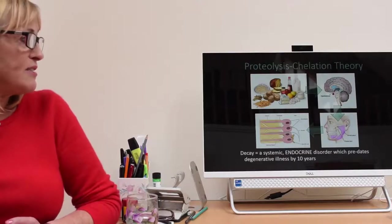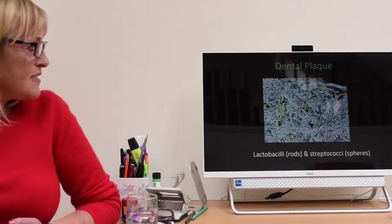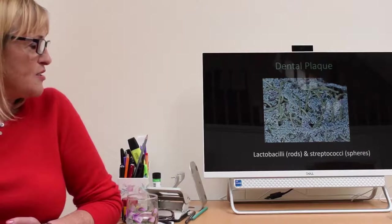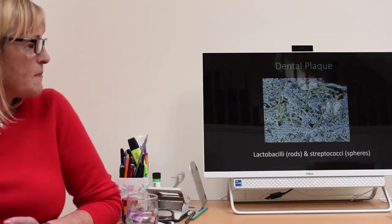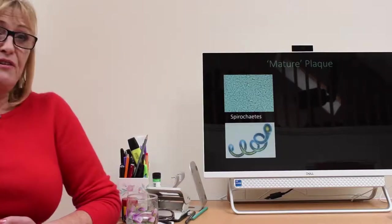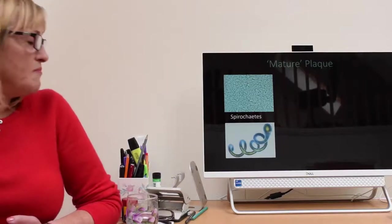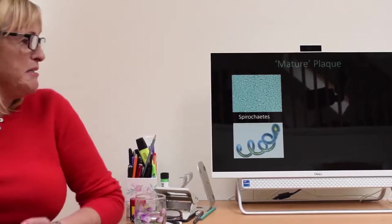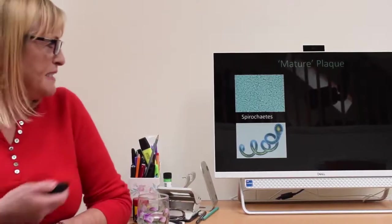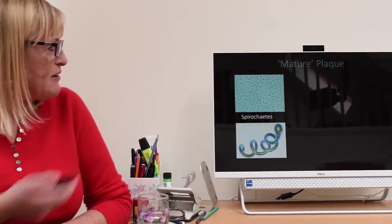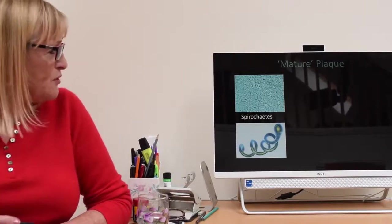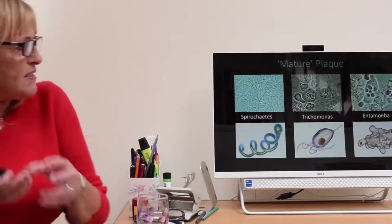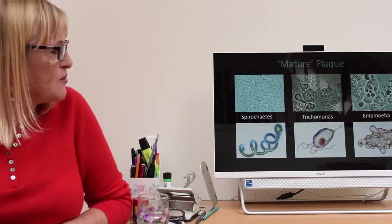This is the proteolysis chelation theory, that the calcium-phosphorus balance of the diet affects the hypothalamus, which produces a hormone affecting the parotid salivary gland. That produces a hormone which impacts the odontoblast. He said it was an endocrine disorder and it predated degenerative illness by 10 years. Any dental decay is an early warning sign. This is regular plaque with lots of spherical streptococci and lactobacilli rods. This is mature plaque. You can see real live plaque under the microscope, a whole ecosystem of beating, pulsating bacteria. These are spirochetes that can burrow into tissues. Trichomonas can swim. Amoebas can squeeze through cell walls.